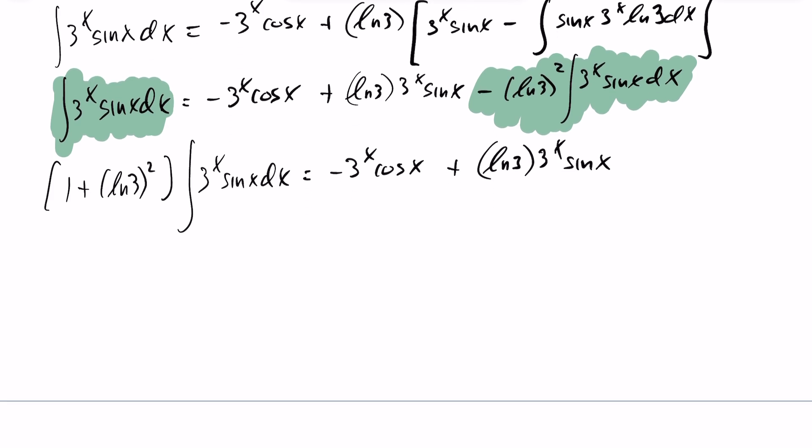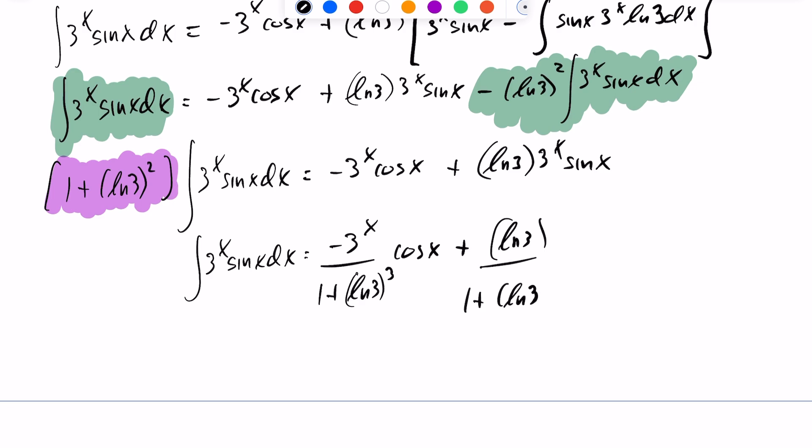So now we can divide out this coefficient here. You can see it right here. Divide this out and we can isolate for our answer. So when I divide this out, I get the integral of 3^x sin(x) dx is equal to negative 3^x over 1 plus ln(3) squared times cos(x) plus ln(3) over 1 plus ln(3) squared times 3^x sin(x).